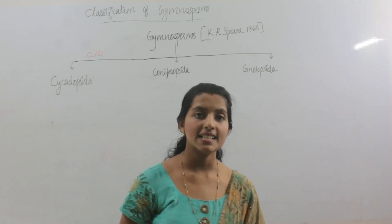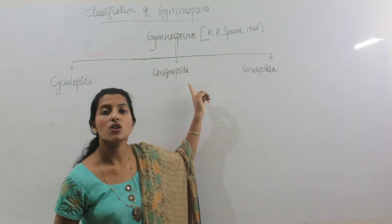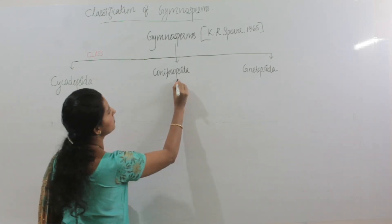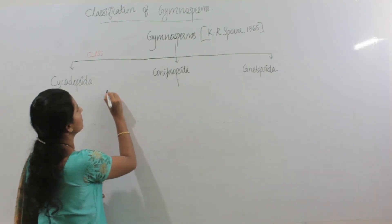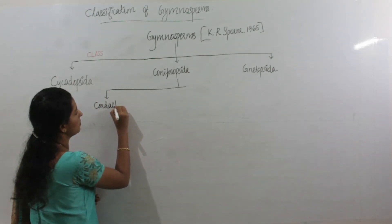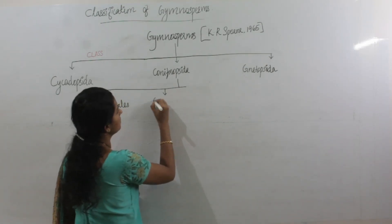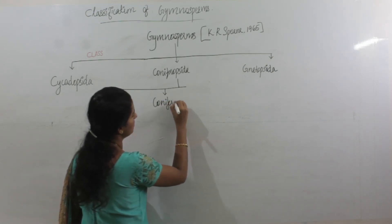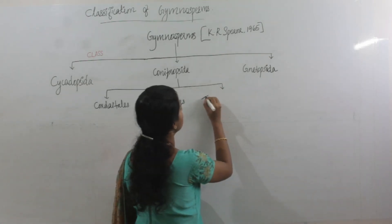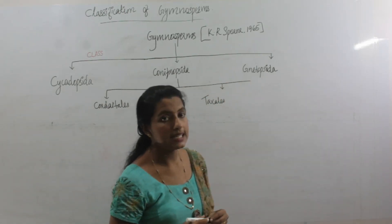In this video, we are discussing the classification of the class Coniferopsida. Class Coniferopsida is divided into four orders. The first order is Cordaitales, the second order is Coniferales, the third one is Taxales, and the final order is Ginkgoales.